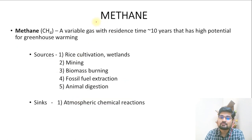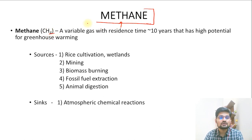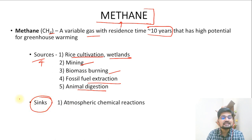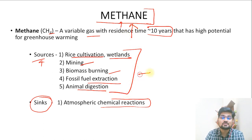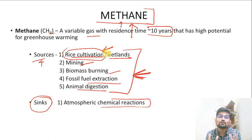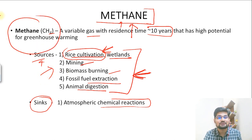Another significant greenhouse gas is methane (CH₄), a variable gas with a residence time of about 10 years. Its major sources include rice cultivation, wetlands, mining areas, biomass burning, fossil fuel extraction, and animal digestion. Its only sink is atmospheric chemical reactions. Methane is important in climate politics — since rice-producing areas are mostly in developing nations, debates arise at climate conferences about whether industrial pollution from the West or rice cultivation methane from developing nations contributes more to climate change.